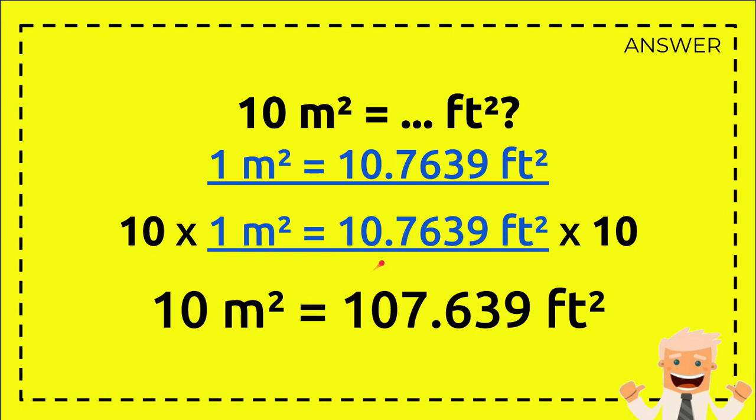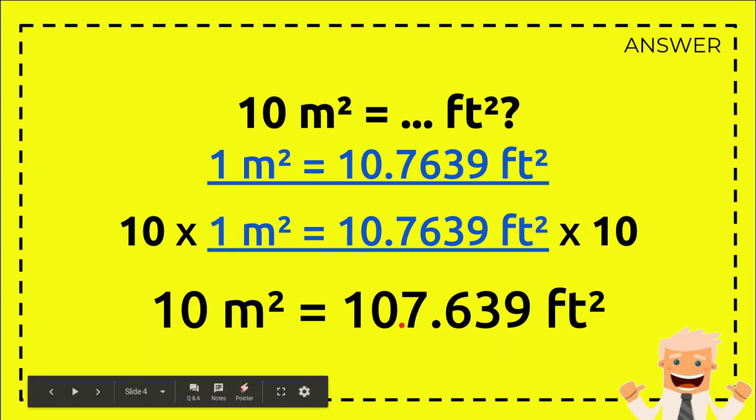Alright, let's continue. 10 times 1 equals 10 square meters. Alright, 10.7639 square feet times 10 equals 107.639 square feet.